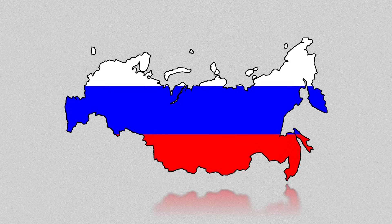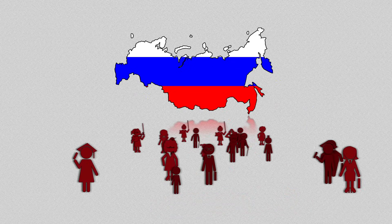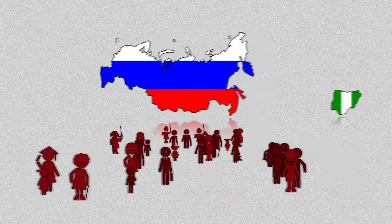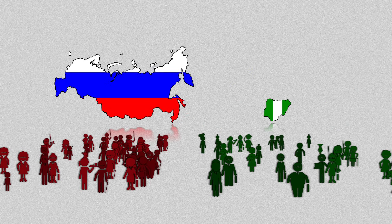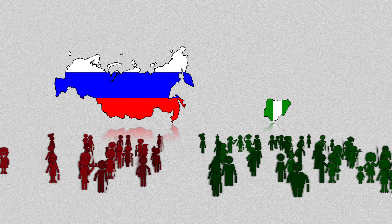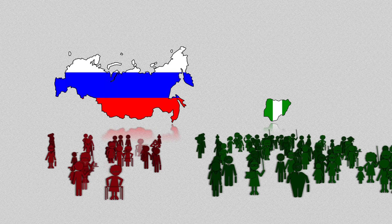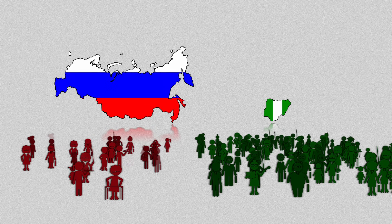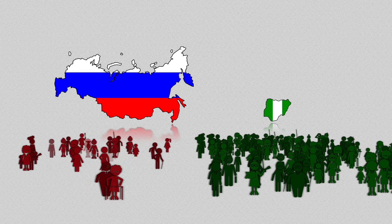Russia, with the largest territory in the world, has roughly the same total population as Nigeria, a country one-sixteenth its size. But this similarity won't last long. One of the populations is rapidly growing, while the other is slowly declining. What can this tell us about the two countries?